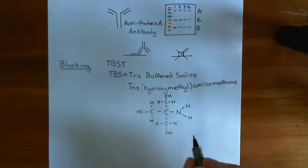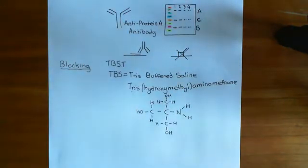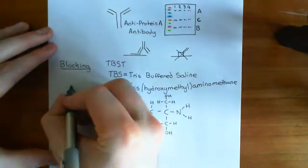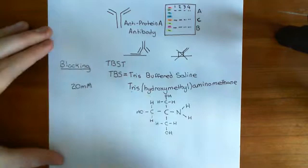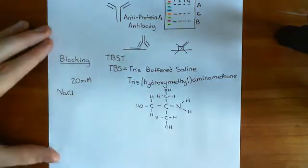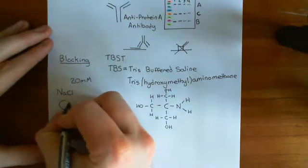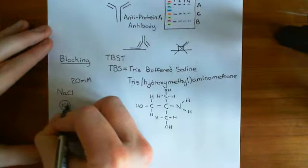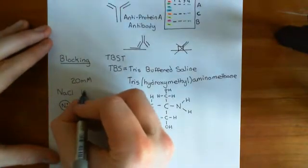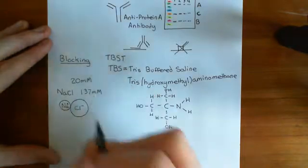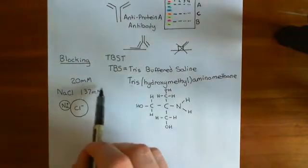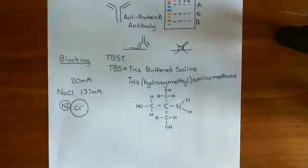Basically, this is going to be one of the major components of Tris-buffered saline. So the concentration of Tris that you want in Tris-buffered saline is around 20 millimolar. Let's now talk about the other key component of Tris-buffered saline. You'll want sodium chloride. So the ionic compound where you have sodium cations bound to chloride anions. And the concentration of sodium chloride that you want within Tris is around 137 millimolar. So that's what Tris-buffered saline is. It's water with salt, and also Tris, and the concentration of salt is 137 millimolar, and the concentration of Tris is around 20 millimolar.